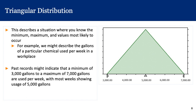Another commonly used distribution is the triangular distribution, which describes a situation where we know the minimum, maximum, and most likely value, and we can construct a triangle from just these three pieces of information. For example, we might describe the gallons of a chemical used per week in the workplace — minimum 3,000 gallons, maximum 7,000 gallons, but most weeks show a usage of 5,000 gallons. We can use these three data points to construct a triangular distribution.